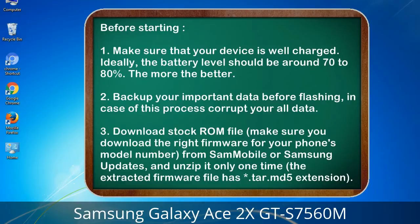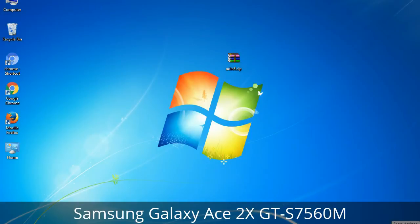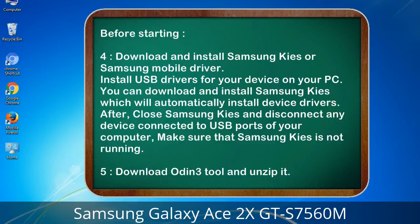3. Download the stock ROM file. Make sure you download the right firmware for your phone's model number from Sammobile or Samsung Updates, and unzip it only one time. The extracted firmware file has a *.tar.md5 extension. 4. Download and install Samsung KIES or Samsung mobile driver to install USB drivers for your device on your PC. After installation, close Samsung KIES and disconnect any device connected to USB ports, making sure Samsung KIES is not running. 5. Download Odin 3 tool and unzip it.